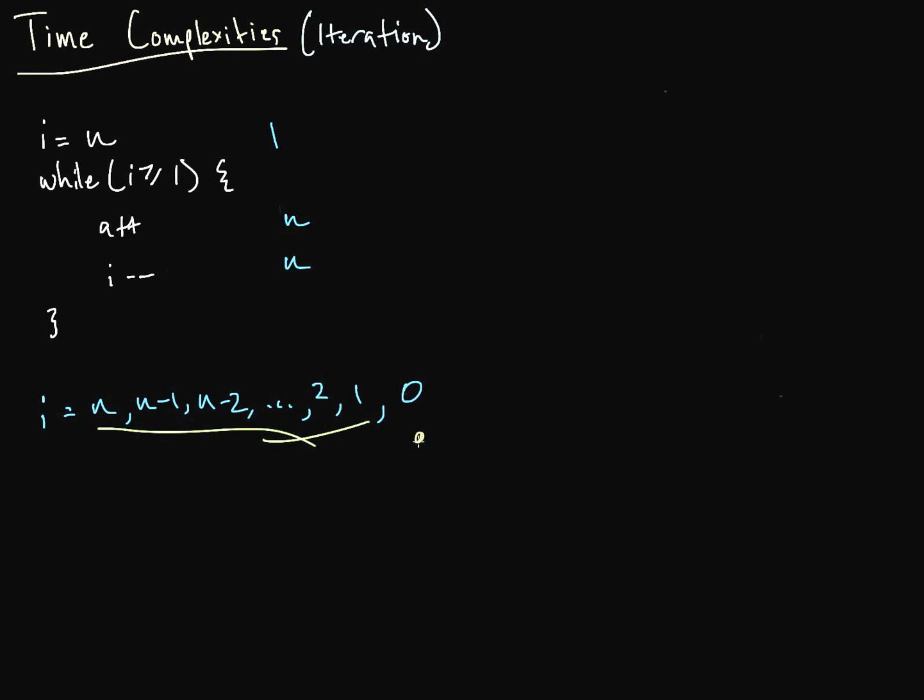Right, but we also had this plus 1 out here so that we could break out of the loop. So here, we have n plus 1. Now, let's erase this. Let's actually calculate our time complexity.